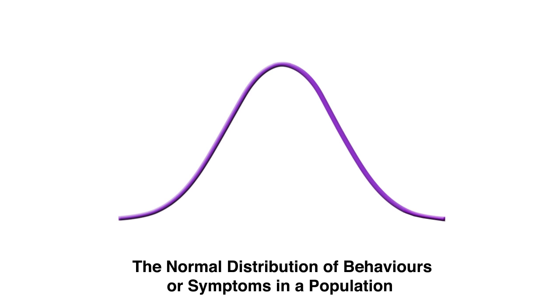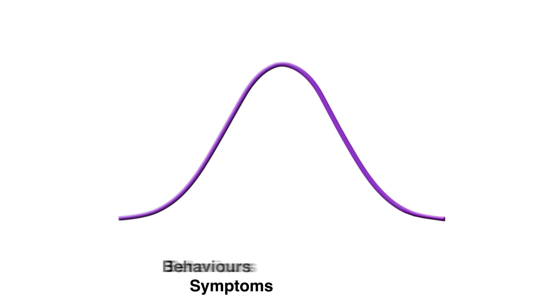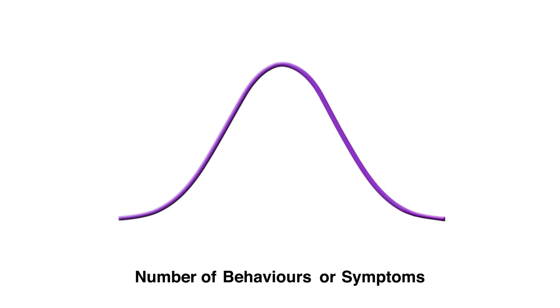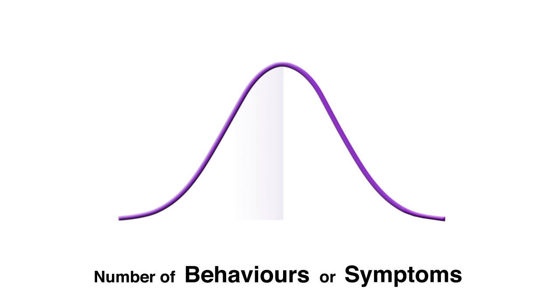One of the key concepts in public health is called Shifting the Curve. This curve represents the normal distribution of behaviors or symptoms in a population. Most behaviors and symptoms occur on a continuum.